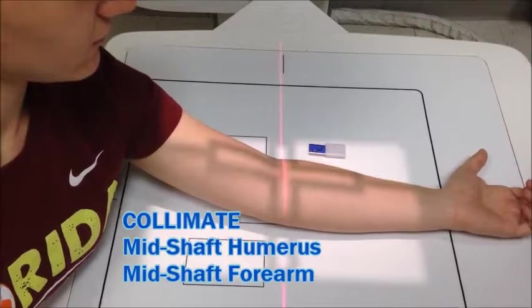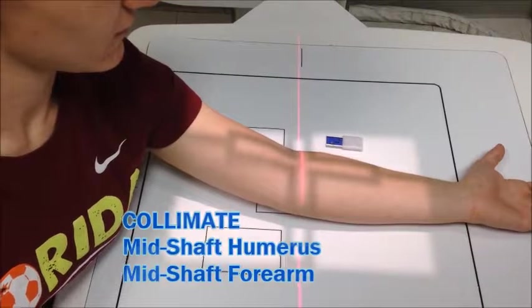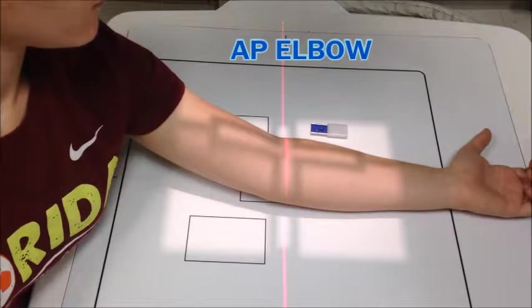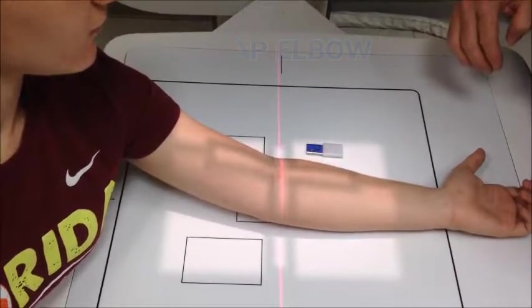You want to adjust your collimation to the mid-shaft of the humerus and mid-shaft of the forearm. This is your AP view.